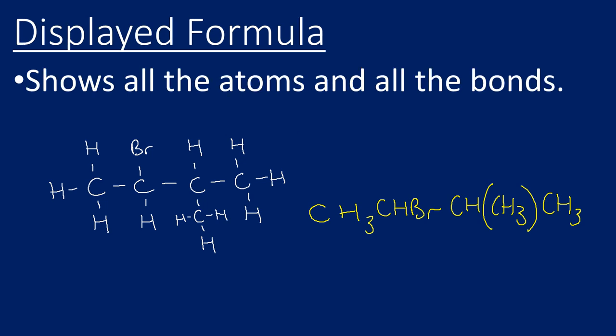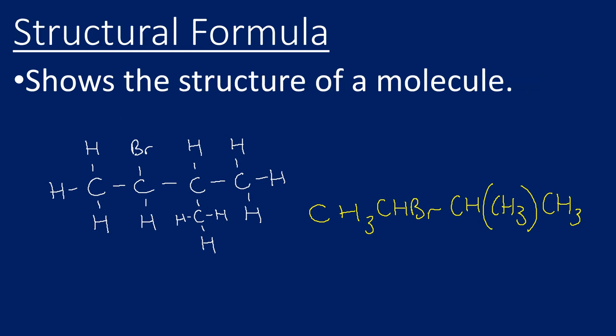The displayed formula shows all the atoms and all the bonds, so the one on the left would be an example of a displayed formula. The structural formula shows us the structure of the molecule without showing the bonds, so the one on the right is the structural formula of the one on the left.